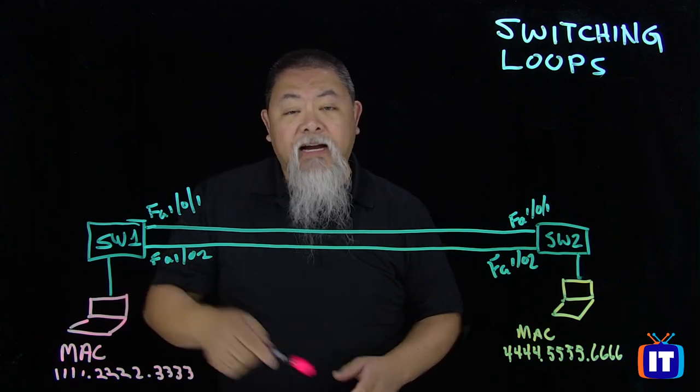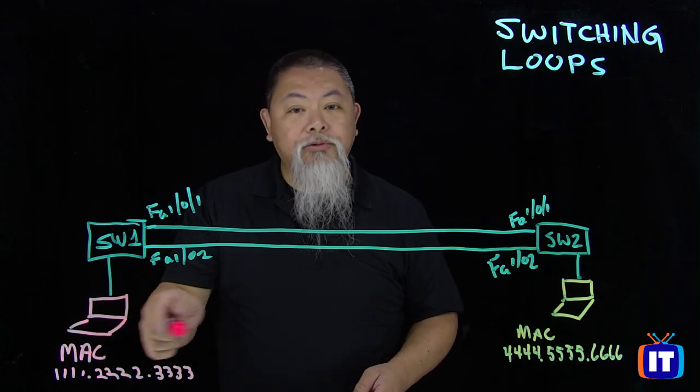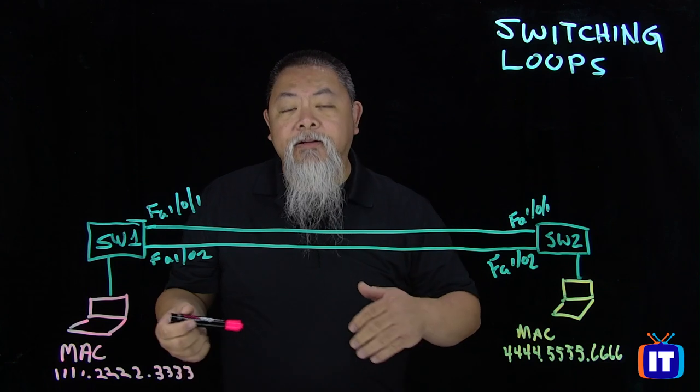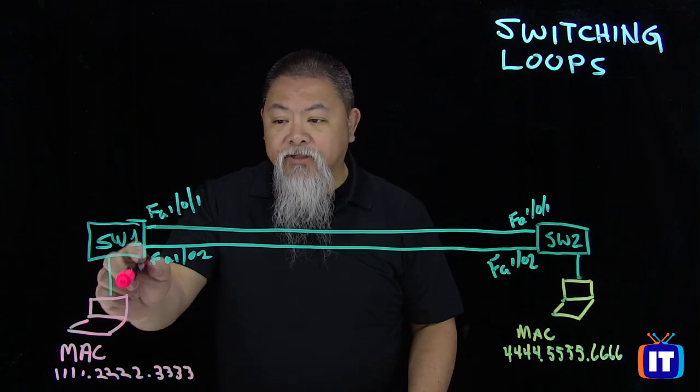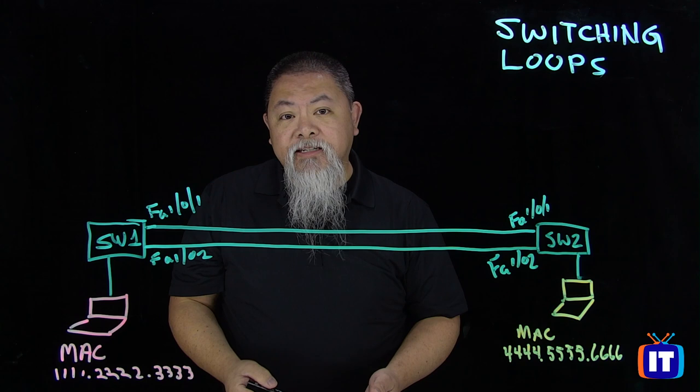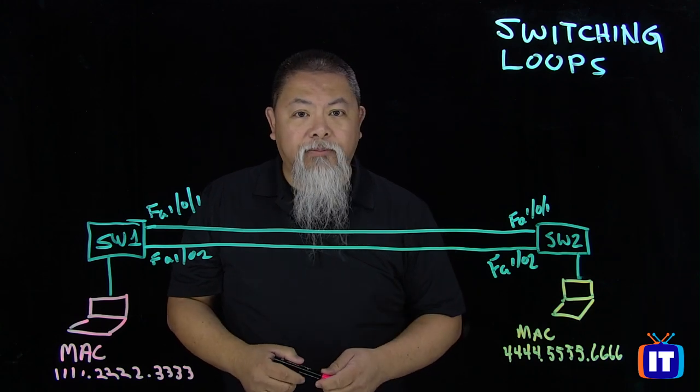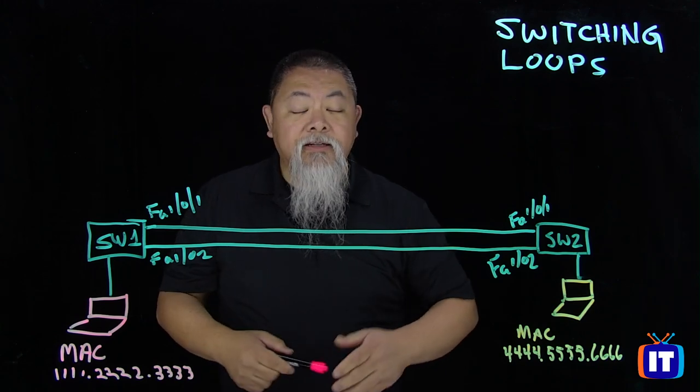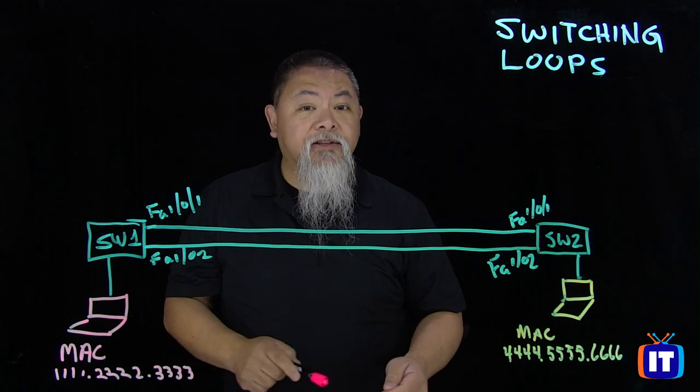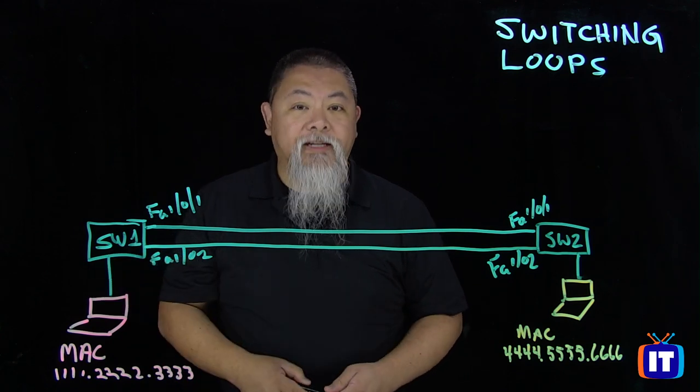So when Mac address over here with the one, two, threes over here, when it wants to issue out a broadcast, it will send it into Switch 1. When it sends it into Switch 1, well, what happens with the broadcast? On the Switch, a Switch will send it out every other port except for the one it came in on.